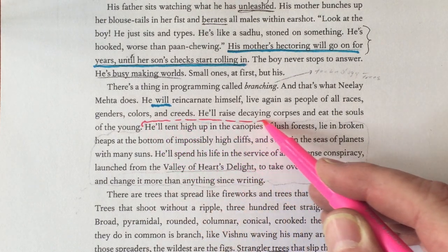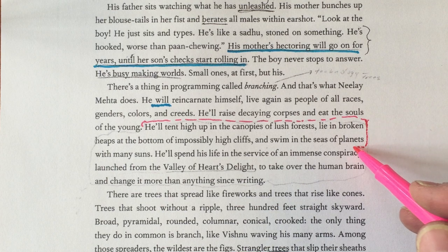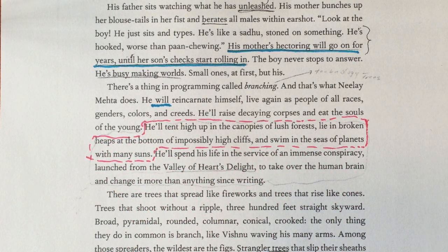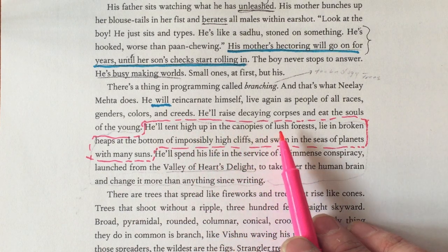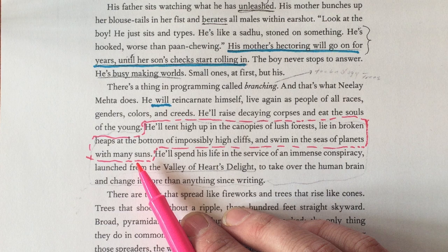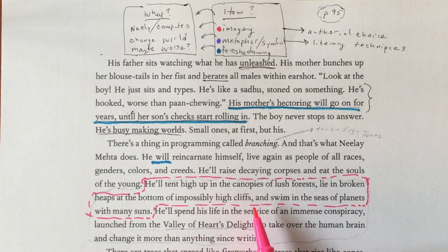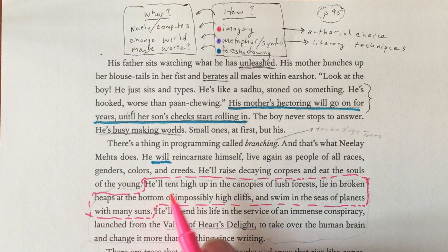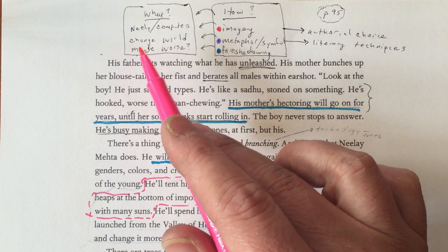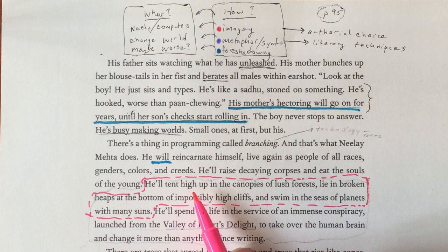Imagery is when an author evokes the senses — things that you see. There's also metaphor in here, but here's some pretty powerful imagery: 'He'll tent high up in the canopies of lush forests, lie in broken heaps at the bottom of impossibly high cliffs, and swim in the seas of planets with many suns.' What is this doing? Well, look how powerful he is — he's swimming in seas, doing impossible things. So Nile's computers will change the world; think like Bill Gates. His technology is going to redefine what it means to be human.